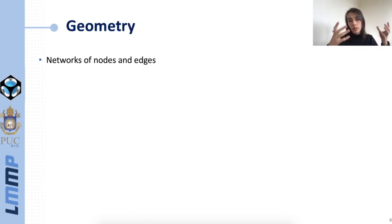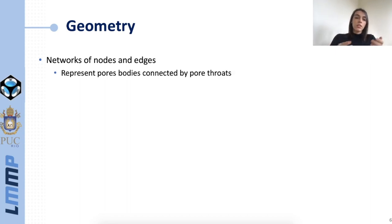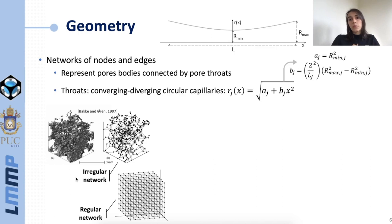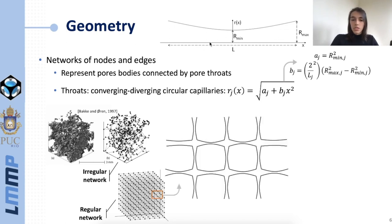Moving to geometry, a pore network is basically a network of nodes and edges that represent pore bodies connected by pore throats. In our model we can use either irregular networks which are based on pore scale imaging or regular networks when this kind of imaging is unavailable. The throats are represented by converging-diverging circular capillaries. The radius of the capillaries follow this equation here which describes a hyperbolic profile.